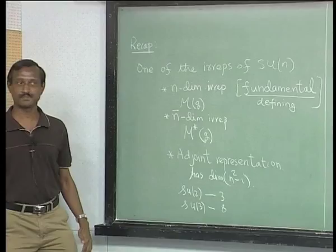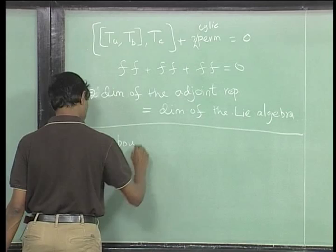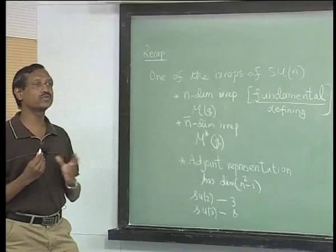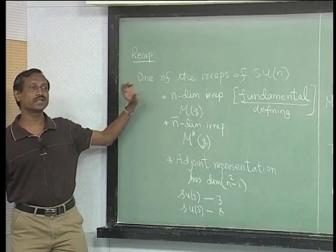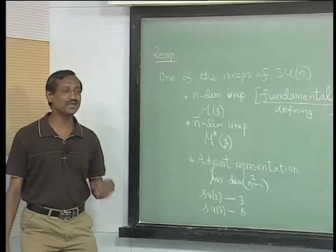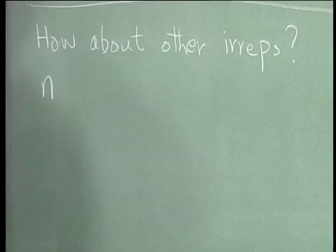Now the question is how to construct all other representations of SU(N). Before doing that I need to introduce some notation. We will start with the fundamental representation and use something called the tensor method, which is pretty much what we did for SO(N). But we will do that for SU(N), and in a sense SU(N) is simpler than SO(N) as you will see. We will start with the n-dimensional representation and construct the rest.